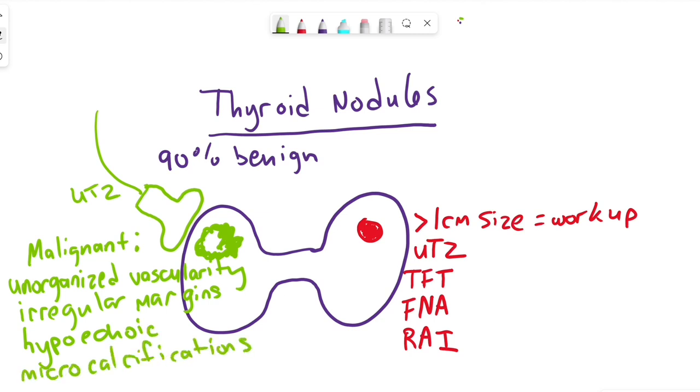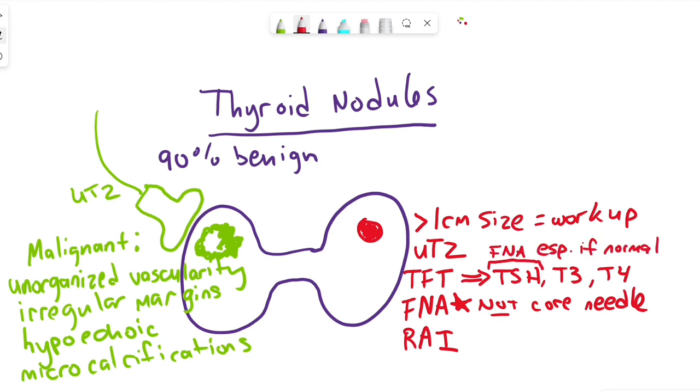If imaging shows a thyroid nodule then do serum thyroid function testing such as TSH, T3, T4 levels, and a fine needle aspiration. Typically, not a core needle biopsy due to the risk of bleeding and surrounding important structures. FNA of the thyroid nodule is especially important if the TSH is normal or high, which indicates a non-functioning nodule. The FNA results are classified by the Bethesda system.